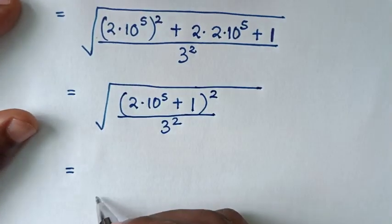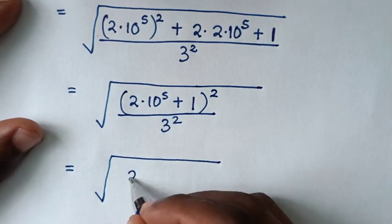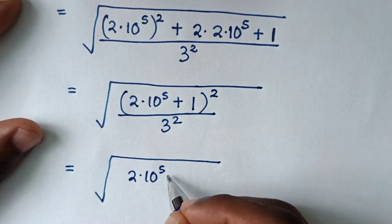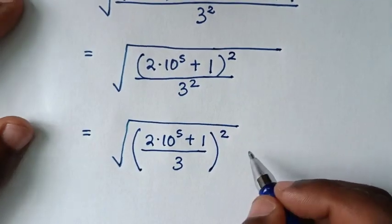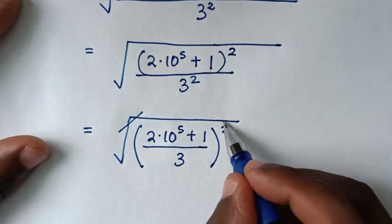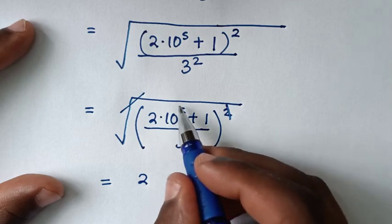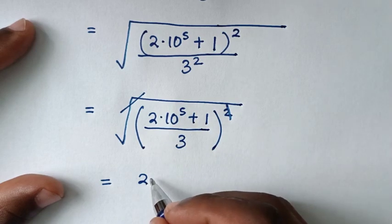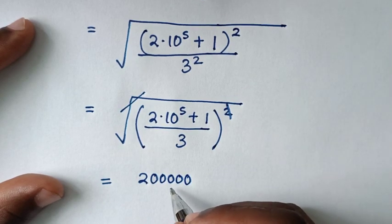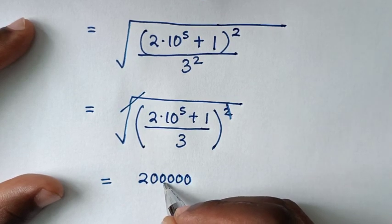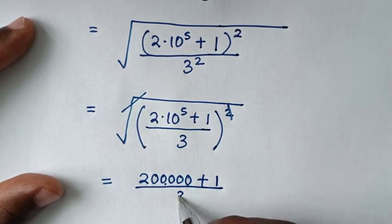In the next step, since we have a common square, it will be (2 times 10 to the power of 5 plus 1) over 3, all squared. The square root cancels the square. Now 2 times 10 to the power of 5 means 2 followed by 5 zeros: 200000. Plus 1 gives 200001.